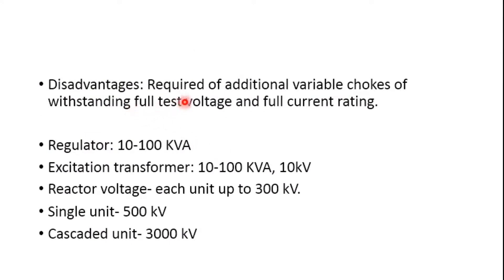The only limitation is that it requires an additional variable choke which must withstand the full voltage and full current. The regulator rating is generally 10 to 100 kVA. A single unit resonant test system gives an output voltage of 500 kV, while in the cascaded unit, output up to 3000 kV for 50 or 60 Hz is available.